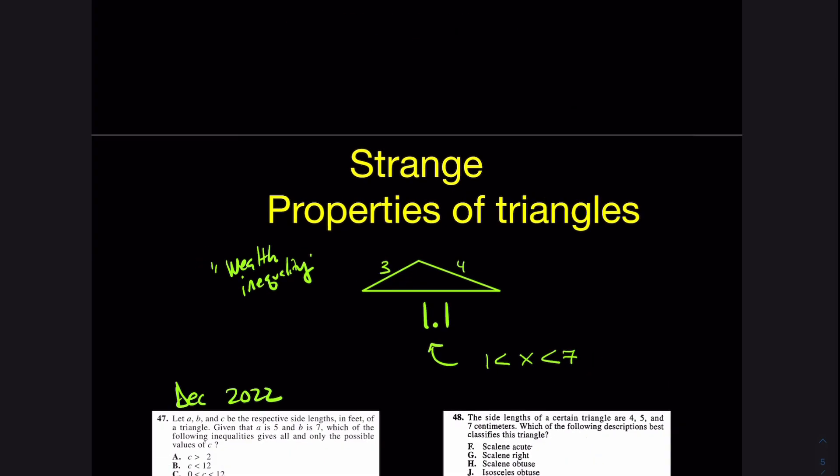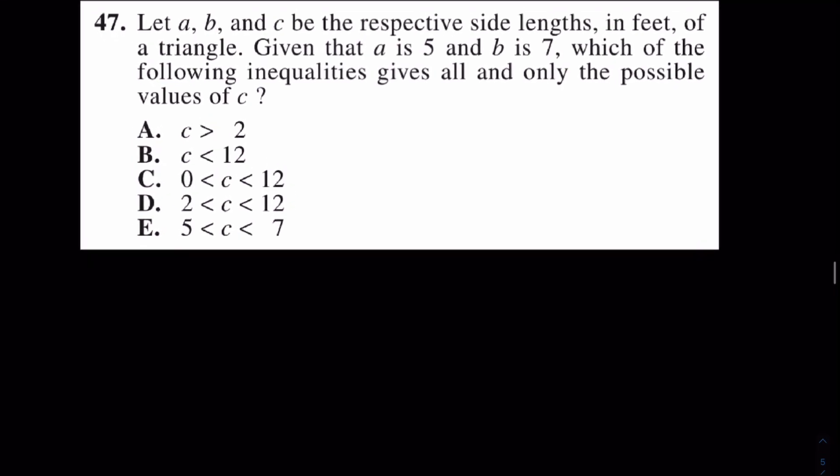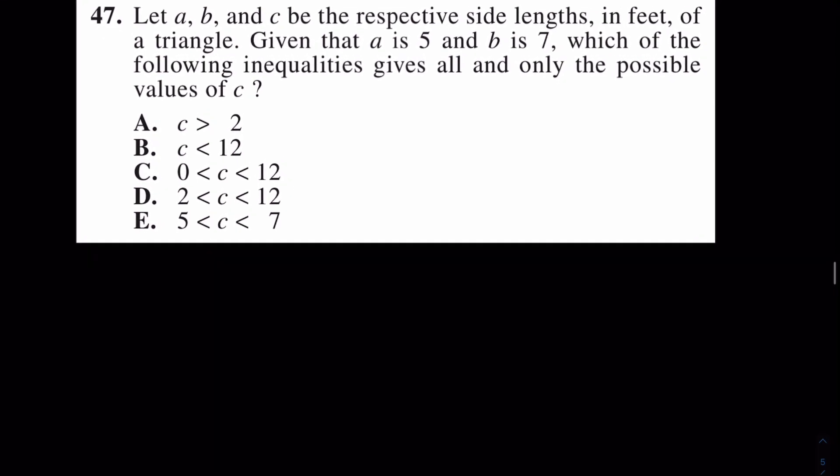So let's see if we can apply this rule to this left question from the December 22 exam. It says: Let a, b, and c be respective side lengths of a triangle. a is 5 and b is 7. Which of the following gives the possibilities for c?